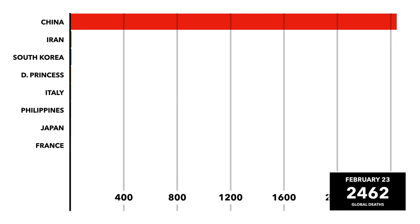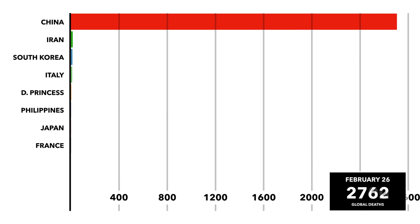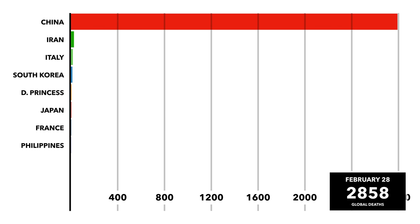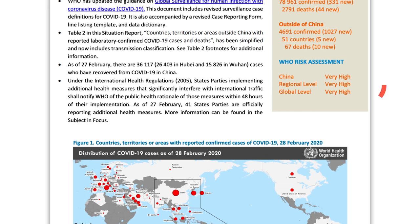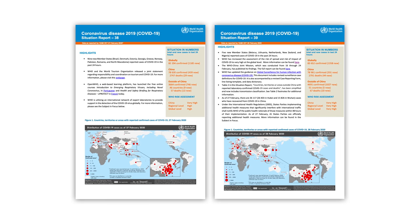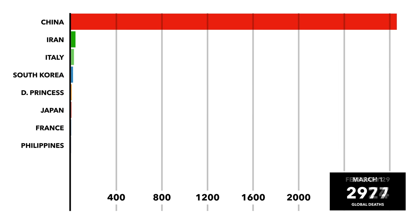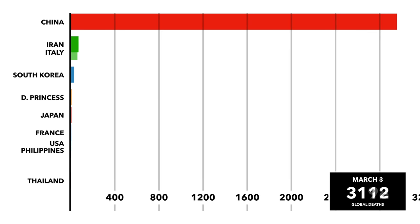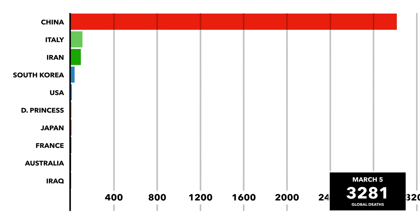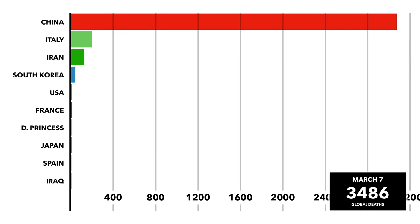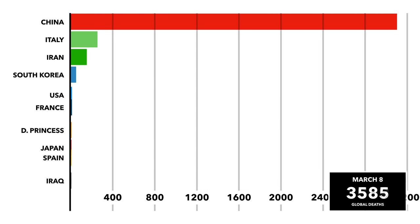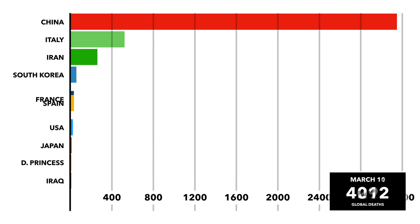However, for quite some time these totals were far, far behind China. By February 28th, you can see Iran and Italy's bars emerge. And interestingly, the WHO declares the level of risk across the world to be very high at this point, with them previously only stating China's risk as very high. It's also around now that China's growth rate begins to slow. Cases in the country continue to rise and push the scale of the graph forward, but as the country is able to get a grasp on the crisis, it decreases and limits the spread. That's why you can now see Iran and Italy catching up with China.